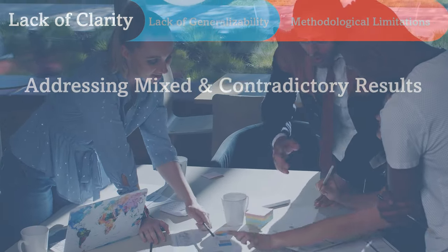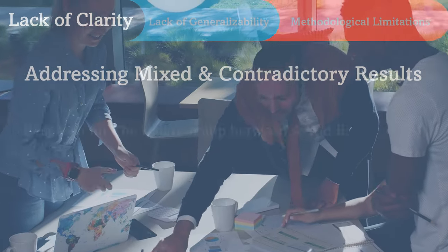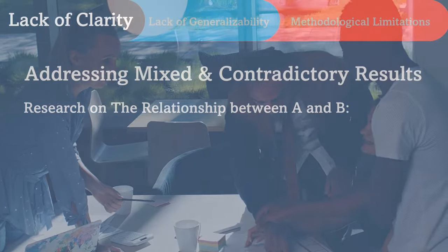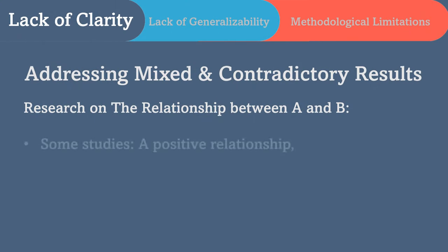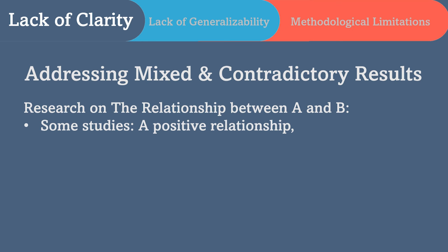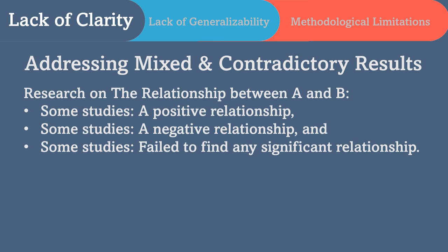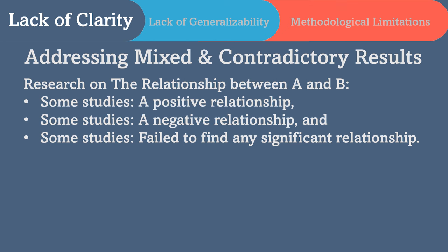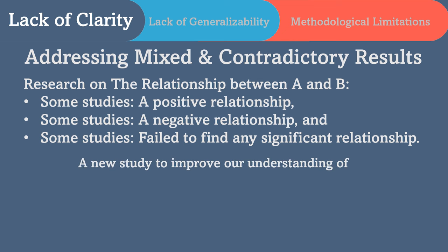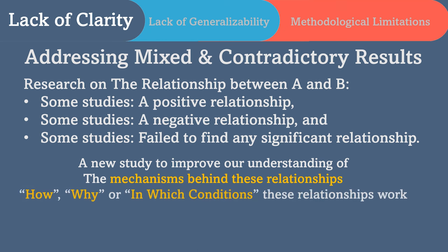The third form of lack of clarity is when there are inconsistency or contradictory results in past studies. This is a good reason to conduct a new study to provide more clarity. For example, some studies may have found a positive relationship between A and B, some a negative relationship, and others may have failed to find any significant relationships. Mixed or inconclusive results may indicate that these relationships work only under certain conditions, so we can conduct a new study to clarify how, why, or in which conditions these relationships work. To fill the research gap, you may introduce a mediator or moderator to the model or conduct a qualitative study.